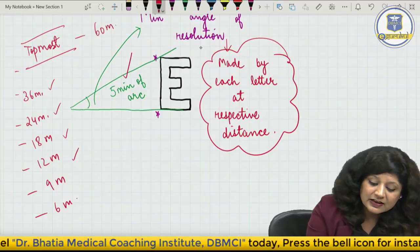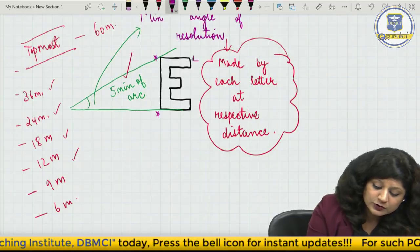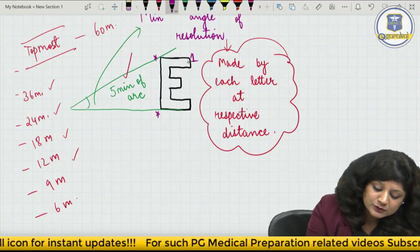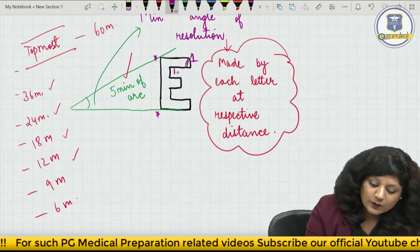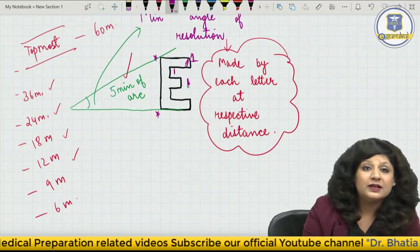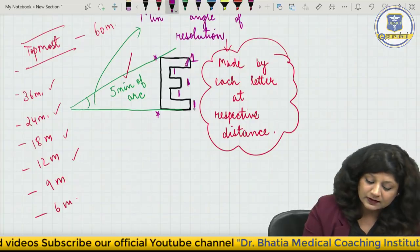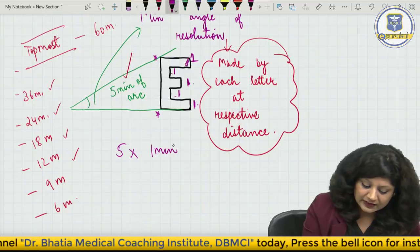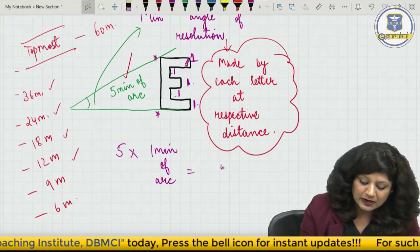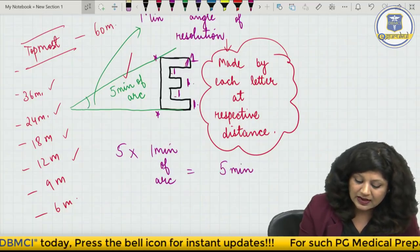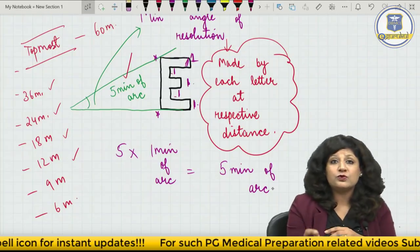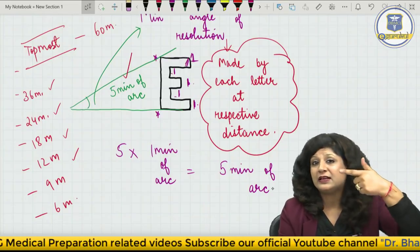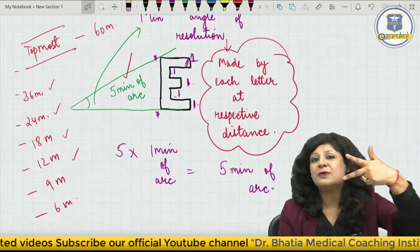You may have seen 1 minute mentioned somewhere. What is this 1 minute? One minute is formed by each individual limb of the letter E. Each limb forms 1 minute, and there are 5 limbs — so 5 times 1 minute of arc is formed, giving the minimum angle of resolution of 5 minutes of arc. Don't get confused by 1 minute — 1 minute is just for one limb. You need the whole 5 minutes of arc to see the entire letter.